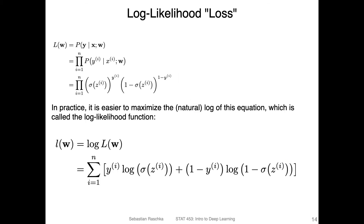We can think of this as the logistic loss — the probability over the whole training set. In practice, it's easier to maximize the natural log of this equation, called the log likelihood function. Applying the log replaces the product with a sum, which is numerically more stable for gradient descent. Maximizing the log likelihood also maximizes the likelihood, so it's equivalent.